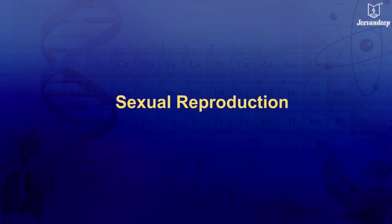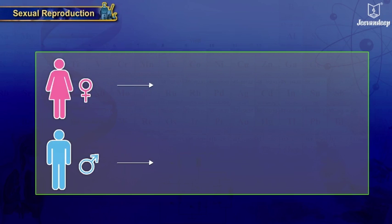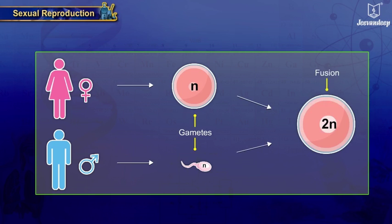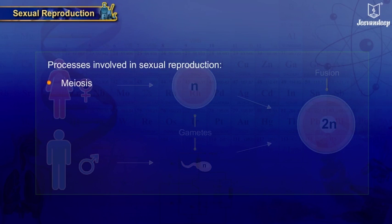Sexual reproduction involves the fusion of the male and the female gametes. The two processes involved in sexual reproduction are meiosis and fertilization.